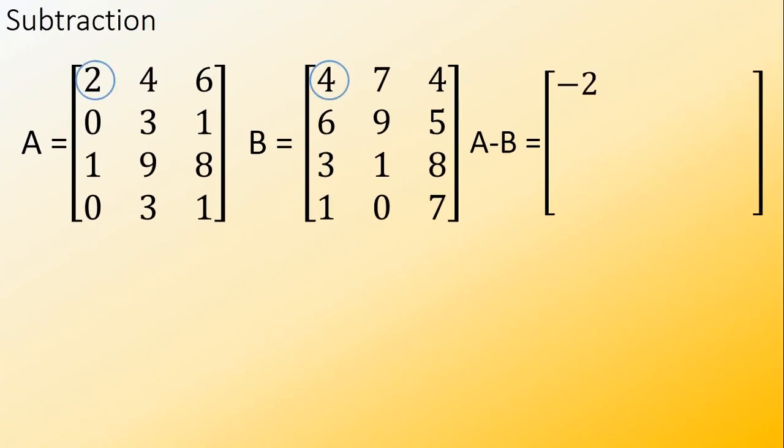So, 2 minus 4 equals negative 2, 4 minus 7 equals negative 3, 6 minus 4 equals 2, 0 minus 6 equals negative 6, 3 minus 9 equals negative 6, 1 minus 5 equals negative 4.